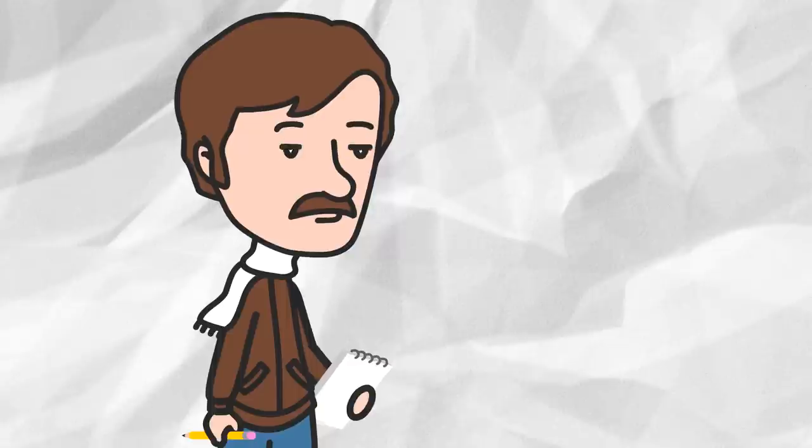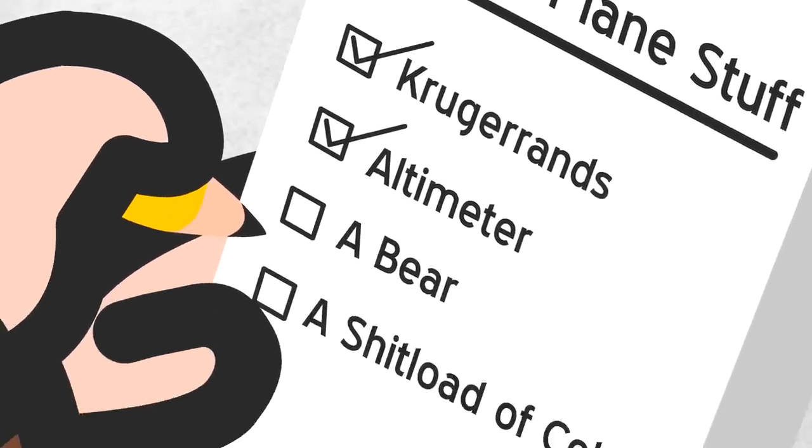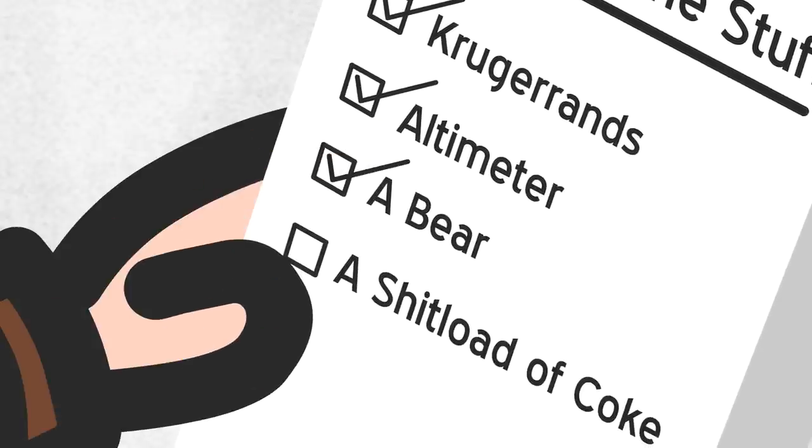He's going down his checklist. He's like, clearance check, altimeter check, a bear check. Get the bear on his plane.